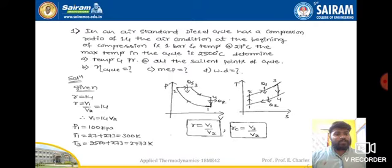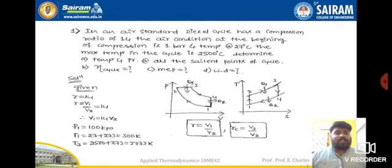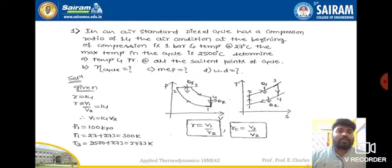So in the PV and TS diagrams, the 2-to-3 process is a constant pressure process during which heat is added. The 4-to-1 process — heat rejection — remains the same as before, at constant volume. The TS diagram looks similar to that of the Otto cycle, with the only difference being that heat addition from 2 to 3 is at constant pressure instead of constant volume.